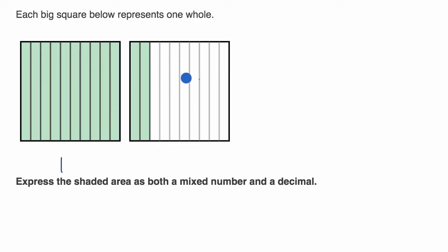we have part of this second whole filled out. And it looks like we are dividing this whole into 10 equal sections. And then two of those are filled out. So as a mixed number, we have one and then you have two of the tenths filled out. So this is going to be one and two tenths.